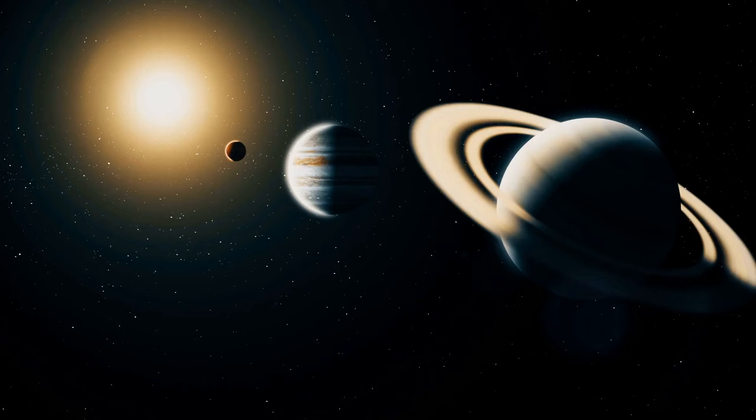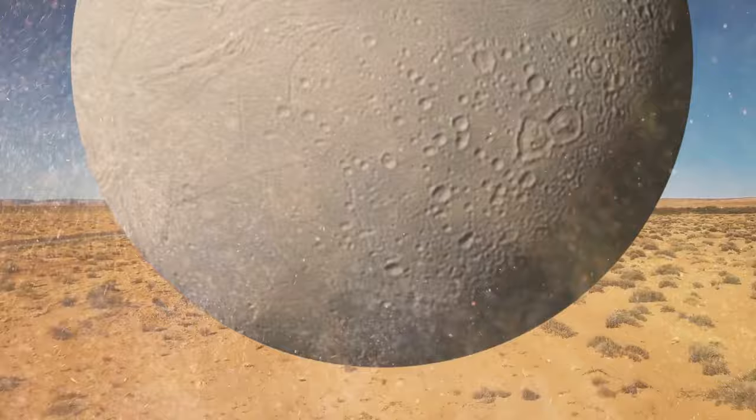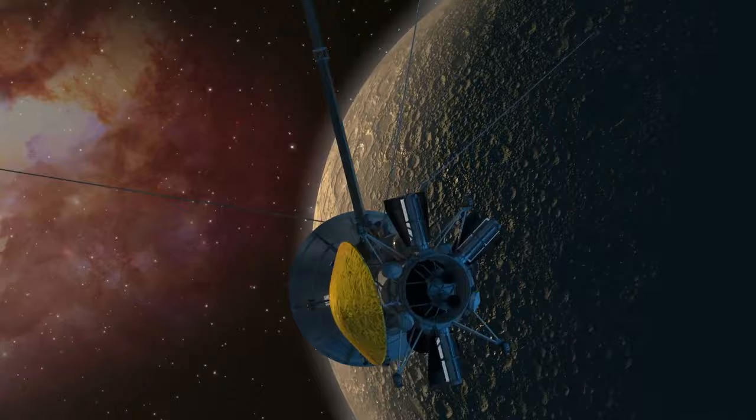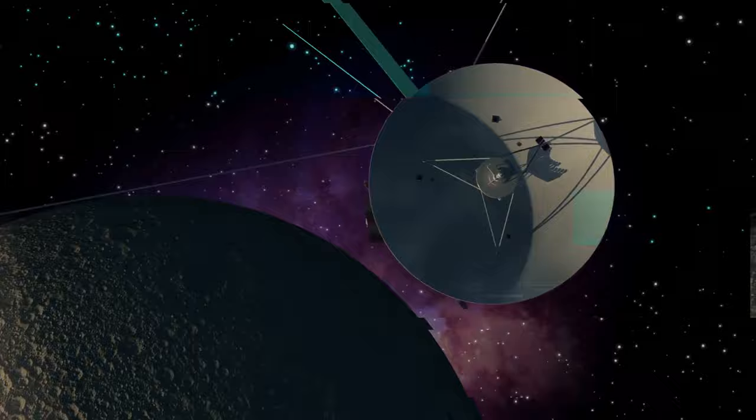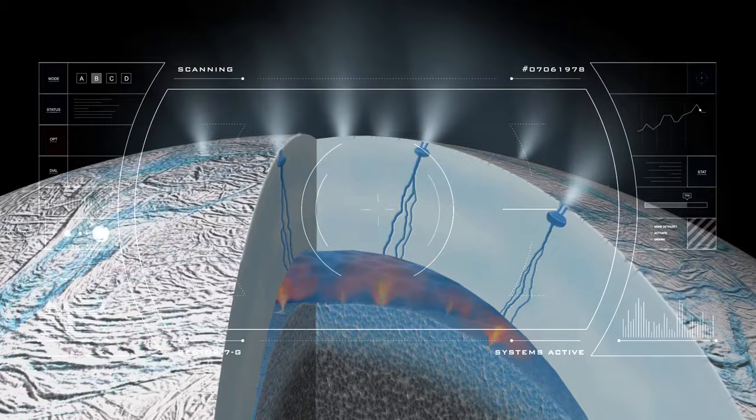Enceladus is the sixth-largest moon of Saturn. It's not really large, only 314 miles across. This makes the space body small enough to fit inside Arizona. When the Cassini space probe first arrived at Saturn, astronomers thought that Enceladus was going to be a frozen ball of ice. But then they spotted plumes of icy particles and water vapor erupting from geysers on the moon's surface. It became clear that there was a global ocean between the moon's rocky core and its icy shell.